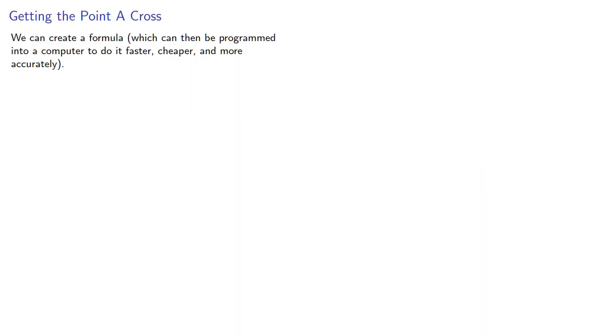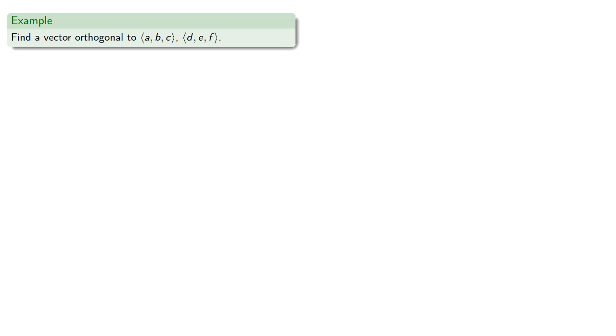Now, we can create a formula which can then be programmed into a computer to do it faster, cheaper, and more accurately. To do that, we'll replace the specific vectors with generic vectors. So let's find a vector orthogonal to (a, b, c) and (d, e, f).